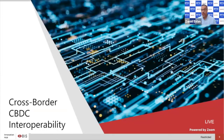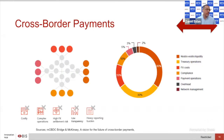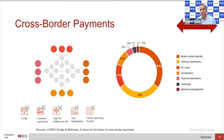When we think about horizontal interoperability, the natural thing to think about is cross-border CBDC interoperability. Cross-border payments, as I'm sure a lot of you know, are costly and complex. They have high FX margins depending on what currency pairs you're looking at, very opaque transparency, and heavy reporting burdens on almost all members involved.